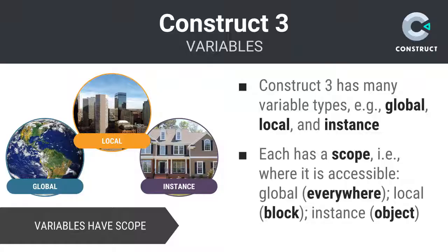Similar to high-level programming languages, Construct's implementation of variables supports the idea of scope. Scope is just a fancy word for where a variable can be used or is accessible. Construct supports three distinct types of variables, each characterized by their different scope.